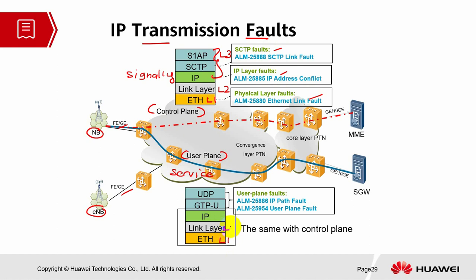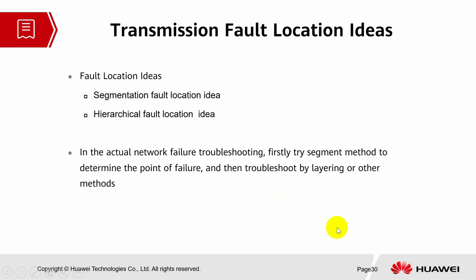For the service-related protocol stack, the layers are the same — Layer 1, Layer 2, and Layer 3. The alarms will be related to user plane faults, for example IP path fault and user plane fault. The ETH link layer and IP are the same as the control plane; the difference is whether the fault is signaling-related or service-related.